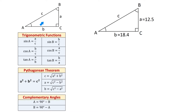Here we have a right triangle with the legs A and B and the hypotenuse C. For all the angles, we use uppercase letters. Angle A is the angle opposite of side A, angle B is the angle opposite of side B, and the right angle C is the angle opposite of the hypotenuse. Below, we have the trigonometric functions of angle A and angle B.